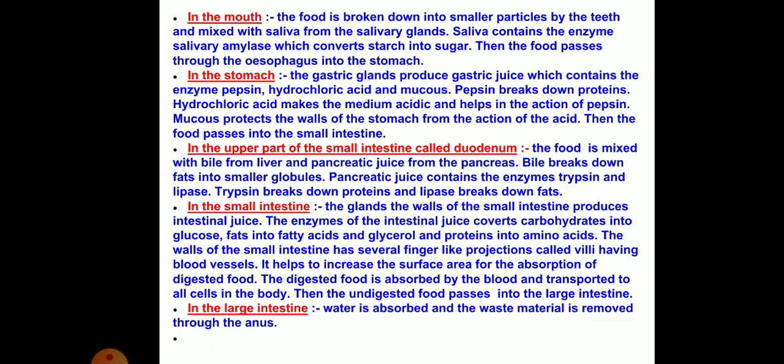Then the food passes through the oesophagus into the stomach. In the stomach, the gastric glands produce gastric juice, which contains the enzyme pepsin, hydrochloric acid, and mucus. Pepsin breaks down proteins. Hydrochloric acid makes the medium acidic and helps in the action of pepsin. Mucus protects the walls of the stomach from the action of the acid.